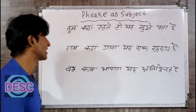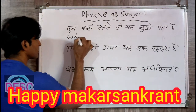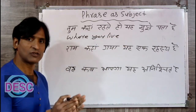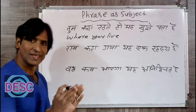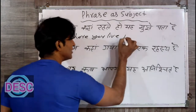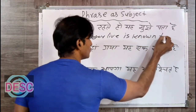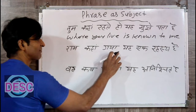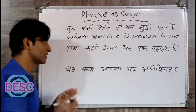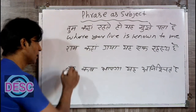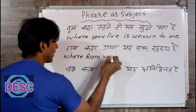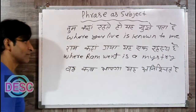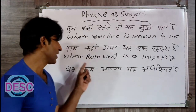Ram kaha gaya — ya ek rahasya hai. Ram kaha gaya — this is the past tense, but this is not a question. So we will make this according to the positive sentence, not as a question. Where Ram went is a mystery. Ram kaha gaya ya ek rahasya hai. Where Ram went is a mystery.